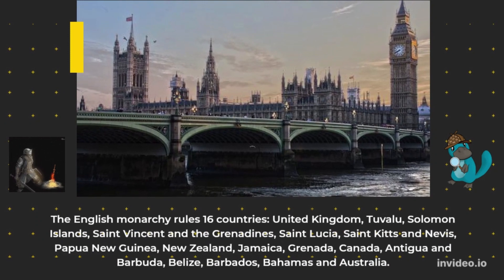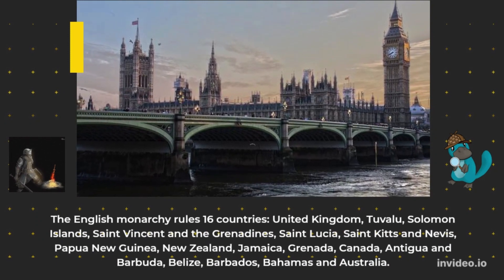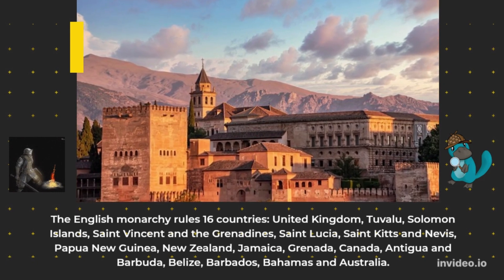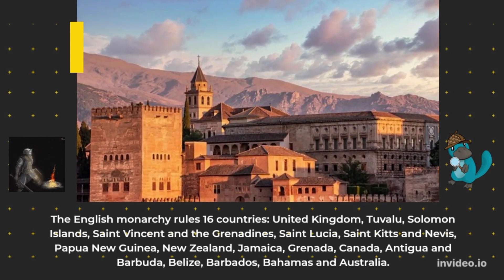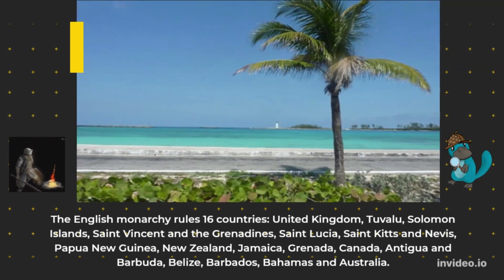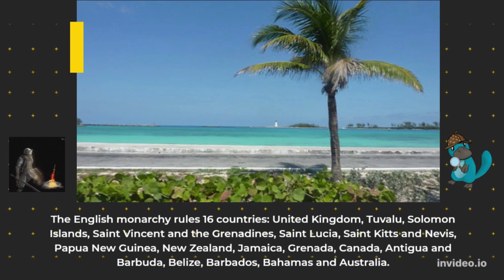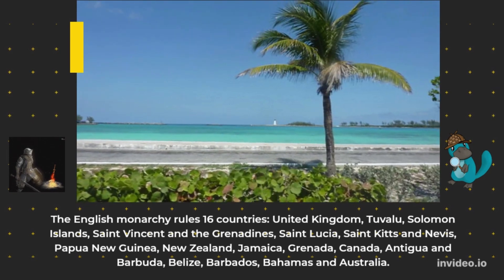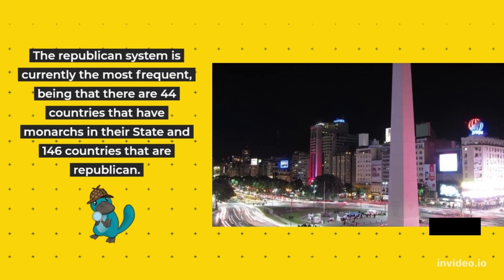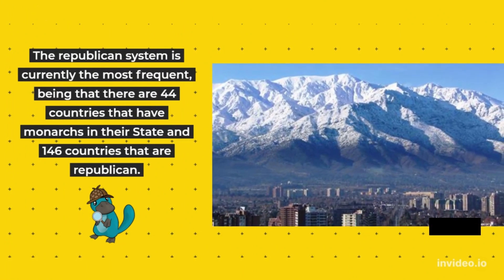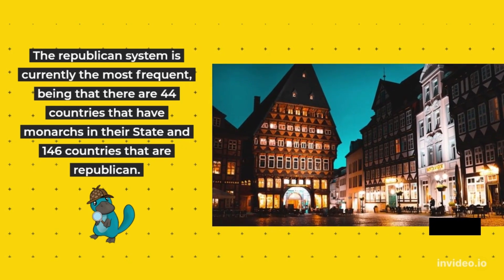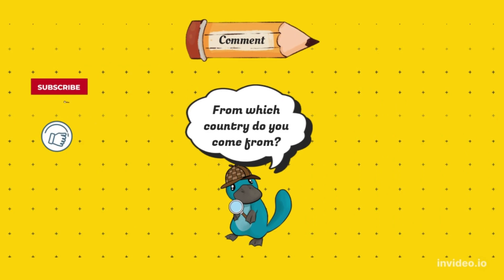The English monarchy rules 16 countries: the United Kingdom, Tuvalu, Solomon Islands, St. Vincent and the Grenadines, St. Lucia, St. Kitts and Nevis, Papua New Guinea, New Zealand, Jamaica, Grenada, Canada, Antigua and Barbuda, Belize, Barbados, Bahamas, and Australia. The republican system is currently the most frequent — there are 44 countries that have monarchs and 146 countries that are republics. From which country do you come from?